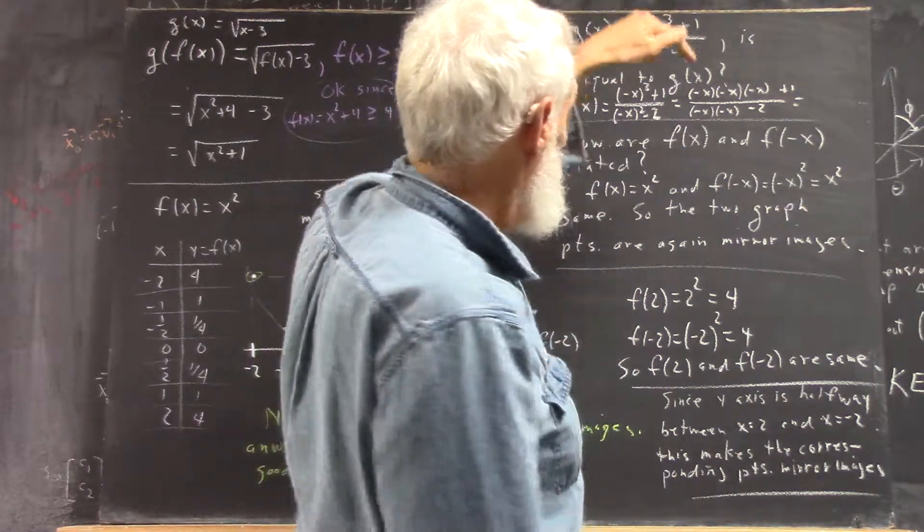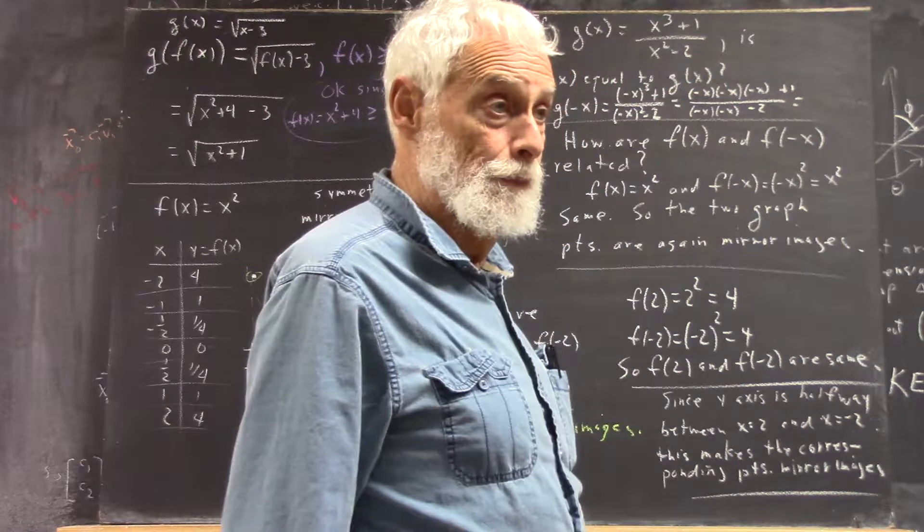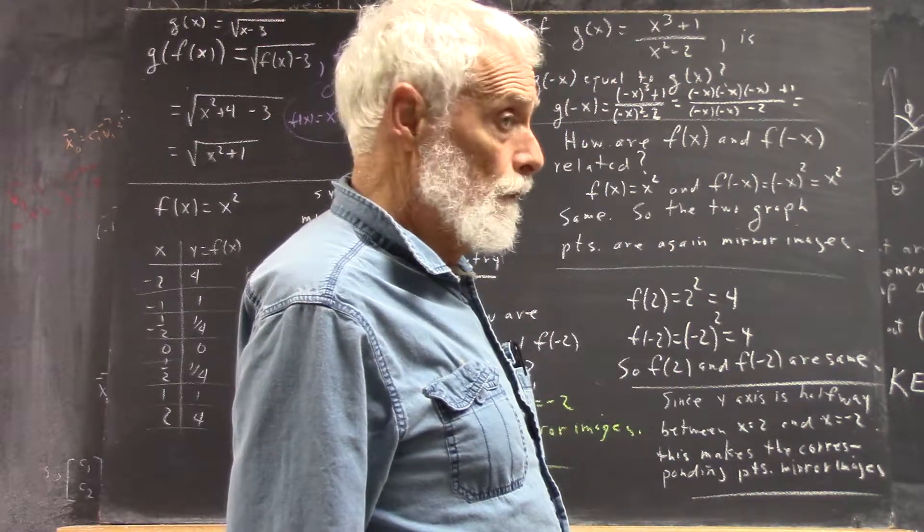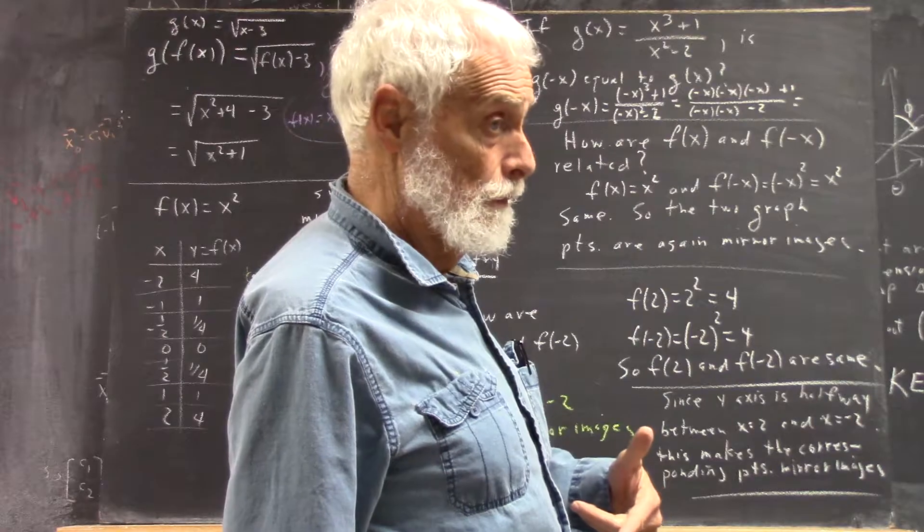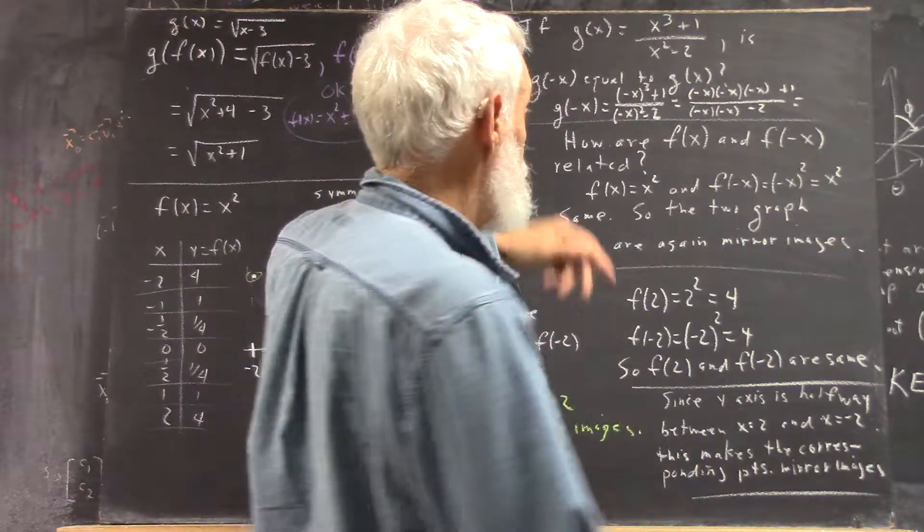Now, what do you get when you multiply negative x by negative x? Positive x. Positive x squared.